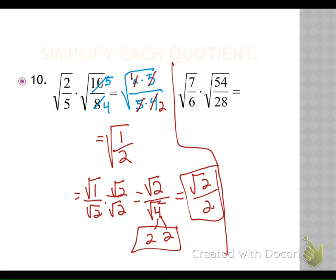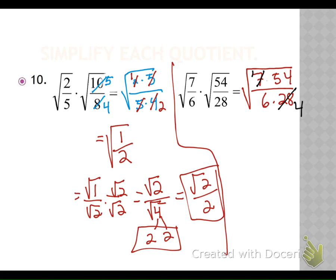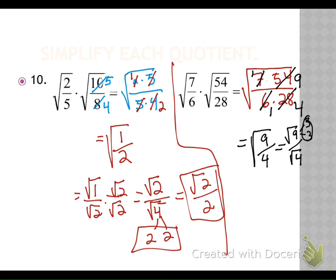Here again we have two fractions. We're going to write it under one radical: numerator is seven times fifty-four, denominator is six times twenty-eight. Do we have anything in common? Seven goes into seven once; seven goes into twenty-eight four times. Six goes into six once; six goes into fifty-four nine times. So in our numerator we end up with one times nine, which is nine. In our denominator, one times four, which is four. This is the square root of nine over the square root of four. Nine goes to three and three — a buddy comes out, we're left with three. Four goes to two and two — a buddy comes out, we're left with two. Three halves is what we're left with.